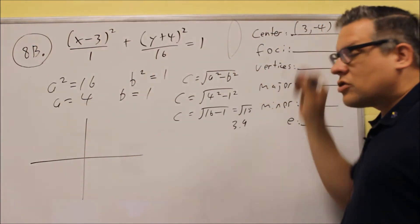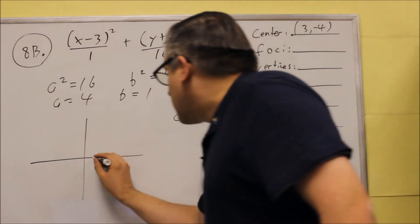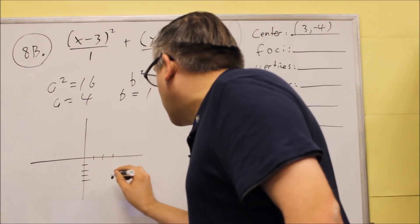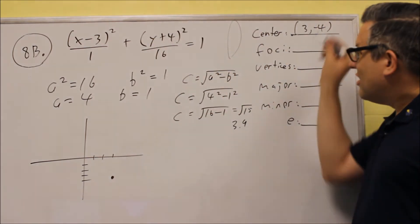So this, we're going to first start by graphing the center. The center is going to be at 3, negative 4. So that's what you always want to begin with is the center.